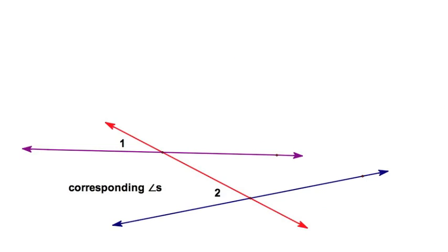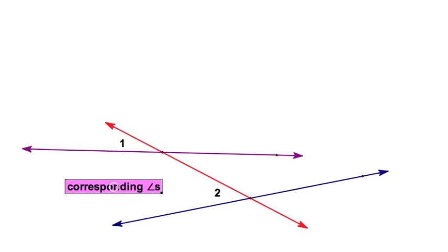Let's explore all these theorems and postulates that have to do with angles formed by two lines and a transversal. We'll start with corresponding angles — angles one and two are clearly corresponding angles, and we know there are three other pairs on this drawing.